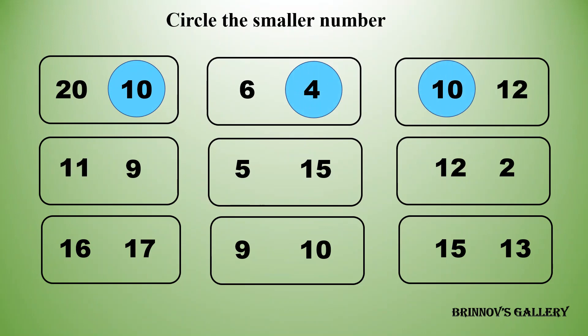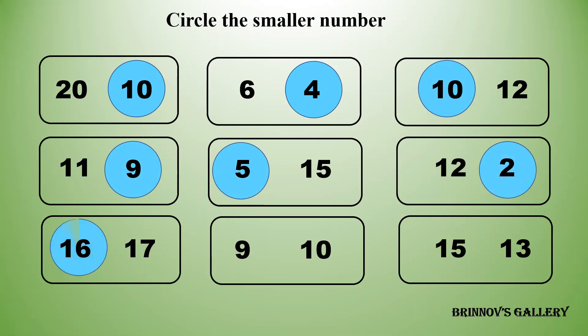11 and 9 — 9 is smaller than 11. 5 and 15 — 5 is smaller than 15. 12 and 2 — 2 is smaller than 12. 16 and 17 — 16 is smaller than 17.